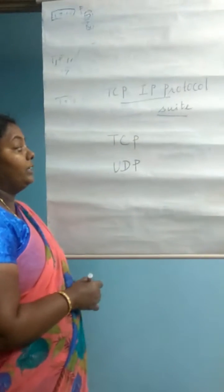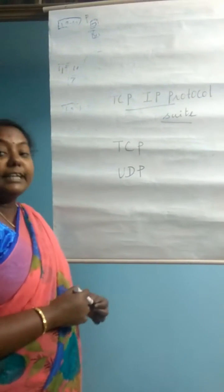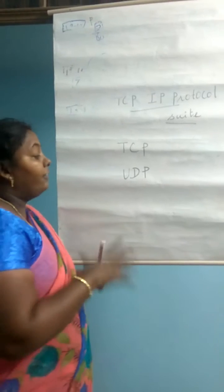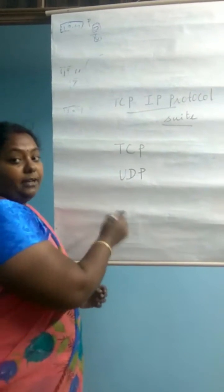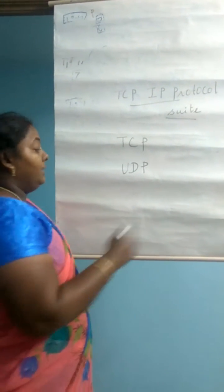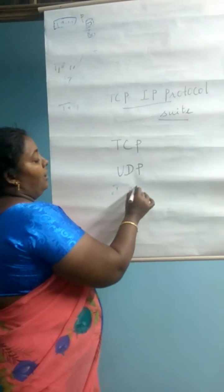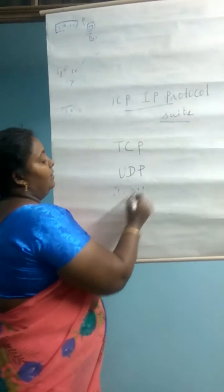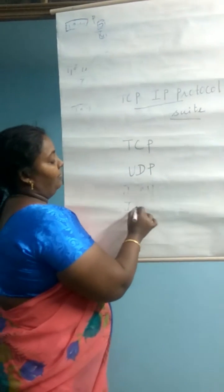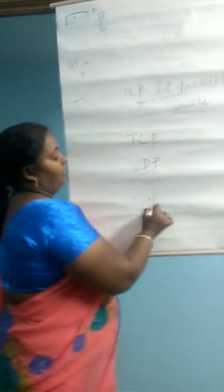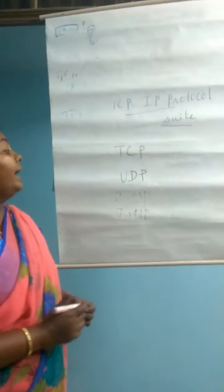Now we look at the internet layer. In the internet layer we have four protocols: ICMP, IGMP, ARP, and RARP.